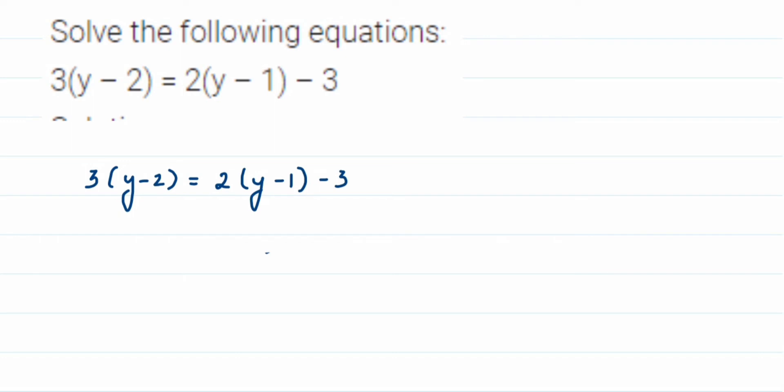We are going to open the brackets. Multiply 3 with y and then 2, so 3y minus 6. That equals 2 into y is 2y, minus is there so 2 into 1 is 2, and we have minus 3. Write that down.